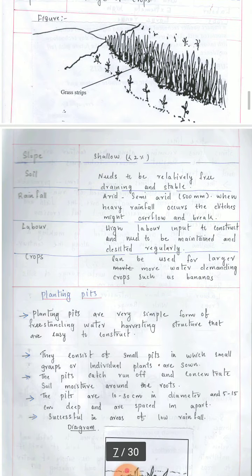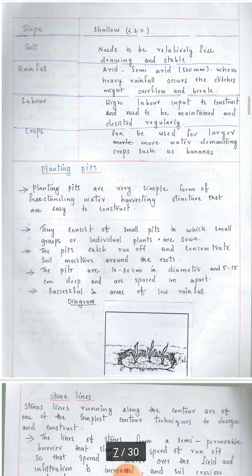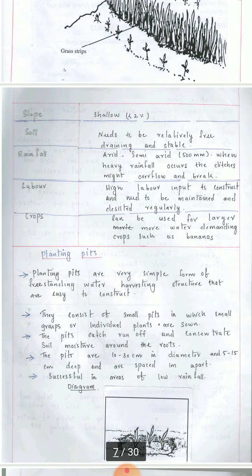Next is planting pits. We make a pit-like structure and cultivate plants in it. Planting pits are a very simple form of free-standing water harvesting structures that are easy to construct. The characteristics include a shallow slope of less than 2 percent, relatively free drainage, and stable soil with no special drainage facility required. Rainfall is suitable for arid to semi-arid areas with about 500 millimeters of rainfall. When heavy rainfall occurs the ditches might overflow and break. Labour input is high — pits need to be constructed and desilted regularly as they fill with soil. Crops include larger, more water-demanding crops such as banana.